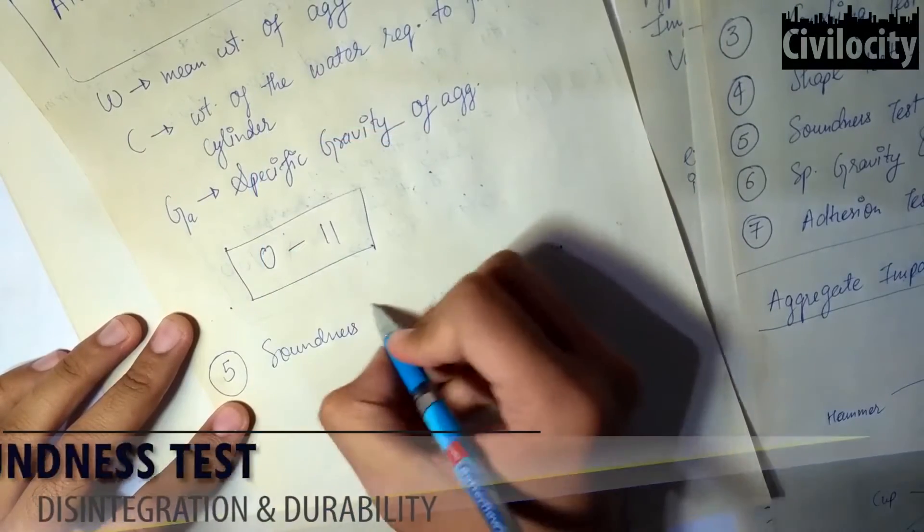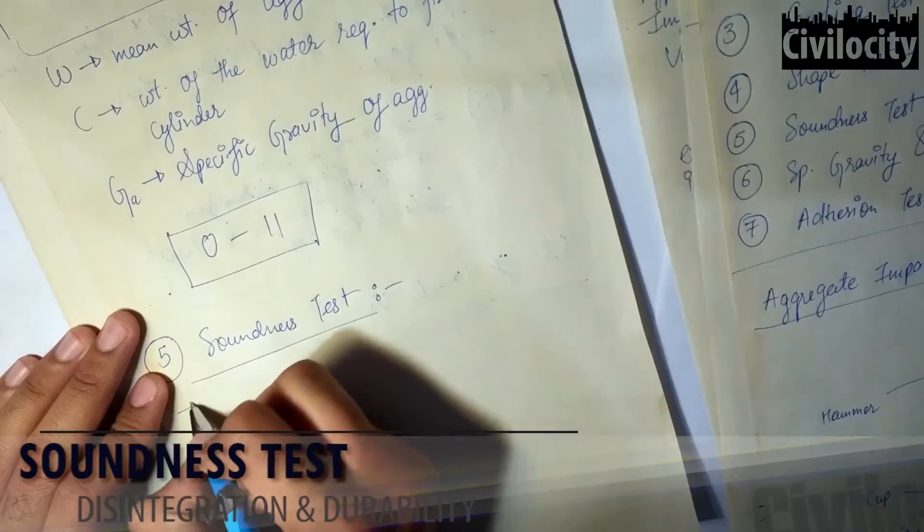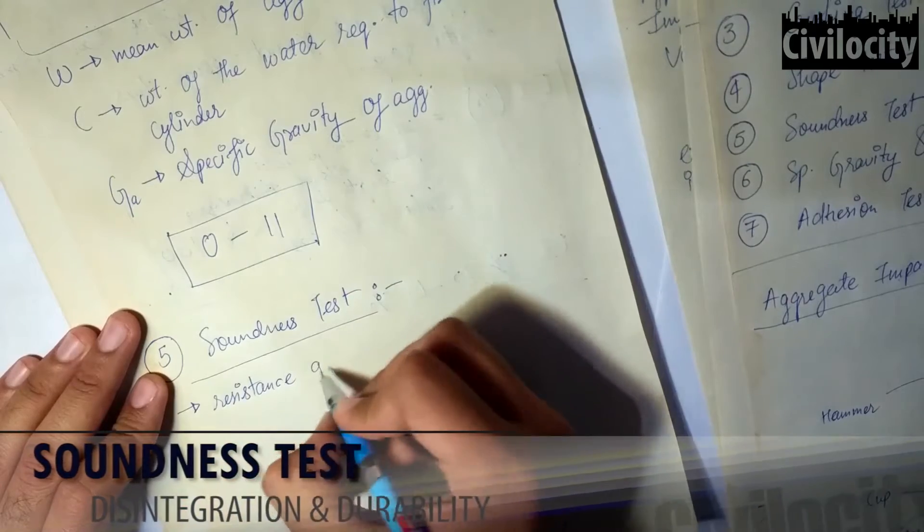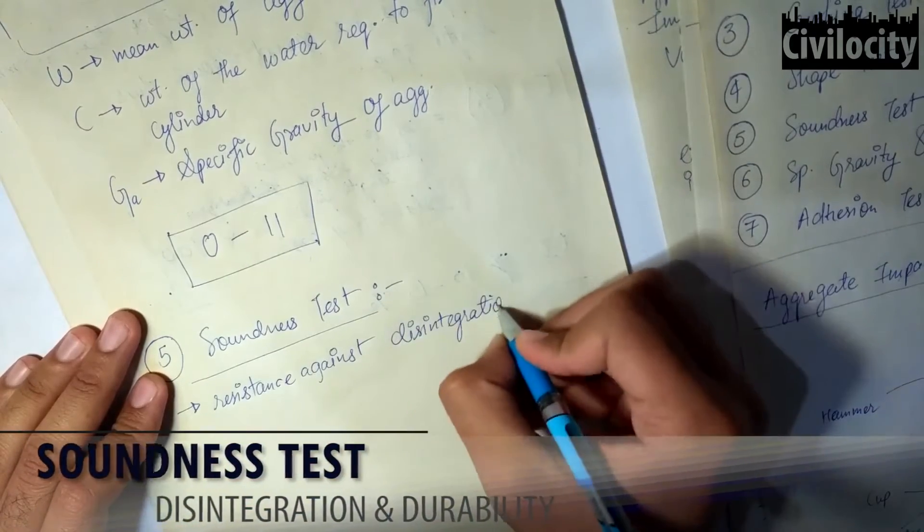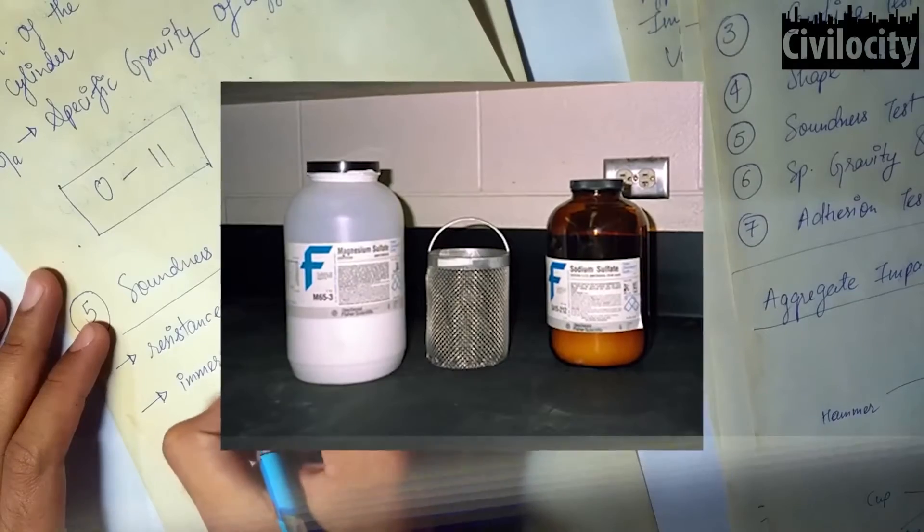Soundness test is done to check the resistance of aggregates against disintegration and is determined by using saturated solution of sodium sulfate or magnesium sulfate.